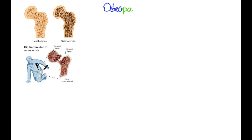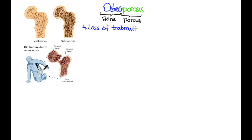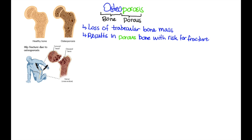Let's talk about osteoporosis. Osteo means bone, porosis means porous. This is due to loss of trabecular bone mass that results in porous bone with a risk for fracture.